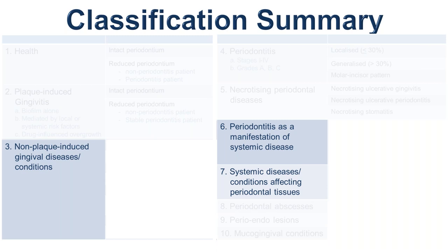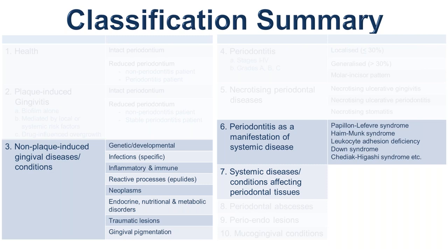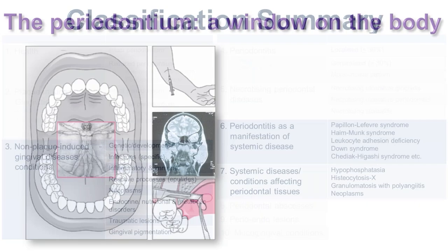Within the classification summary, the non-plaque-induced gingival diseases and conditions have essentially eight categories. Periodontitis as a manifestation of systemic disease includes a number of conditions I'll largely focus on. When it comes to systemic diseases and conditions affecting the periodontal tissues, there's a long list. I'm going to make this a very clinical presentation, as visually illustrative as possible, so that it's practically useful.